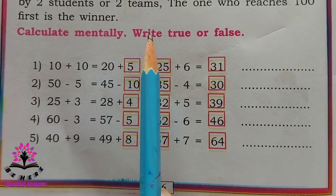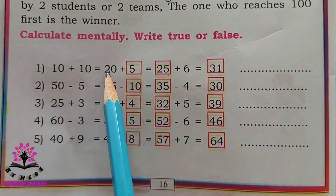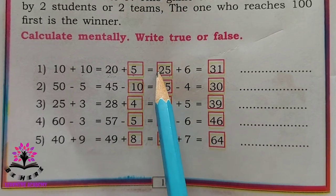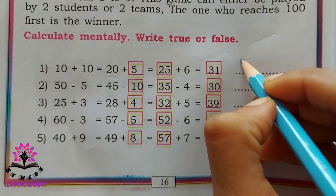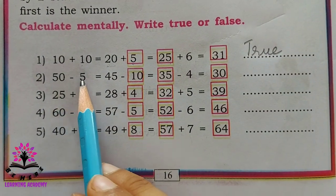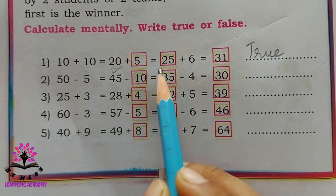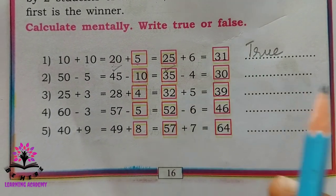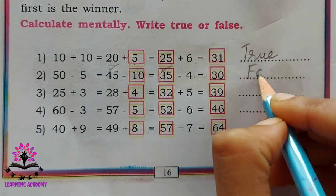Calculate mentally — true or false. 10 plus 10 is 20, correct. 20 plus 5 is 25, correct. 25 plus 6 is 31, correct — that is true. Next: 50 minus 5 is 45, correct. 45 minus 10 is 35, correct. But 35 minus 4 is 31, not 30 — so that is false.